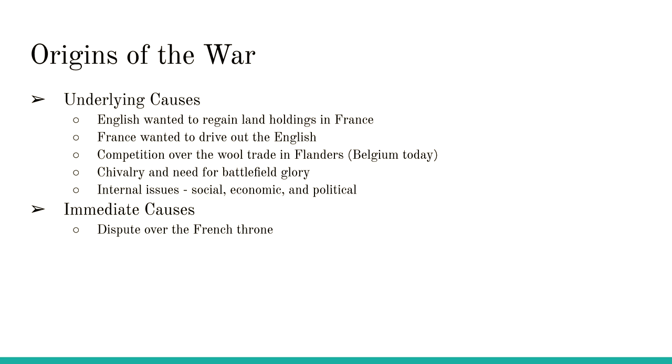Then there was the problem with the wool trade. Wool from England was sent across the English Channel to what is modern-day Belgium, but back then it was called Flanders. In the late 1200s and early 1300s, the French tried to take control of Flanders, and that disrupted the wool trade. That caused a problem for the English king because a lot of their money came from the tax on wool going to Flanders.